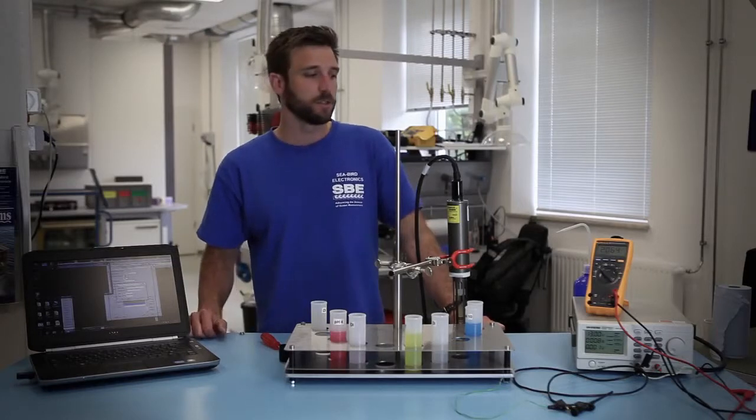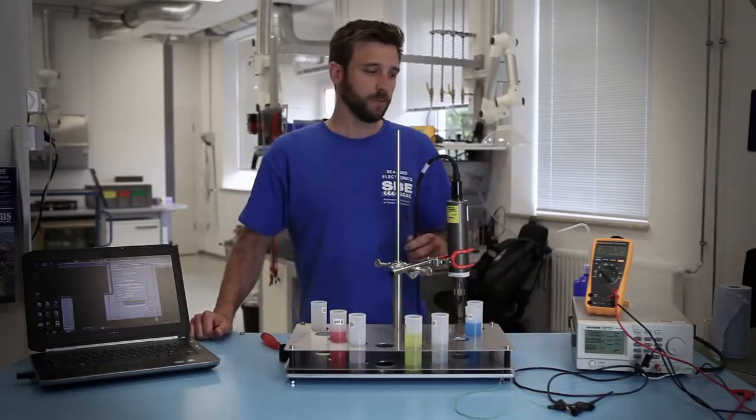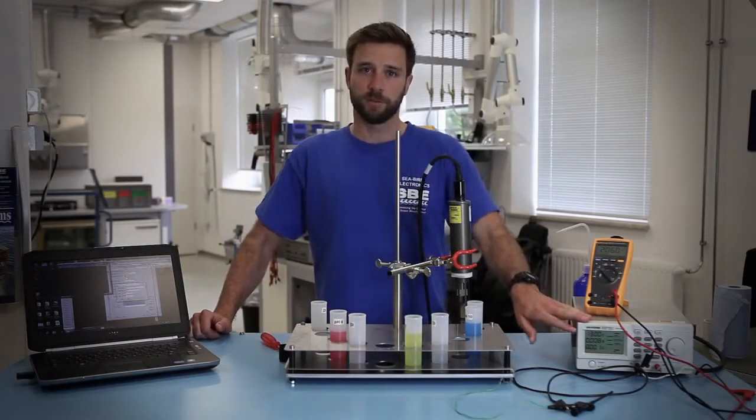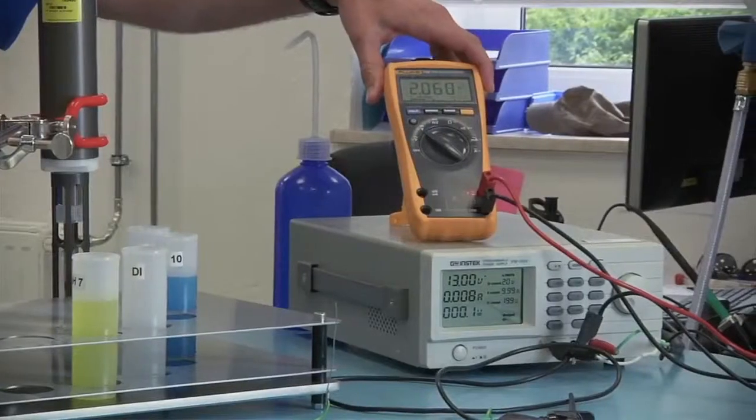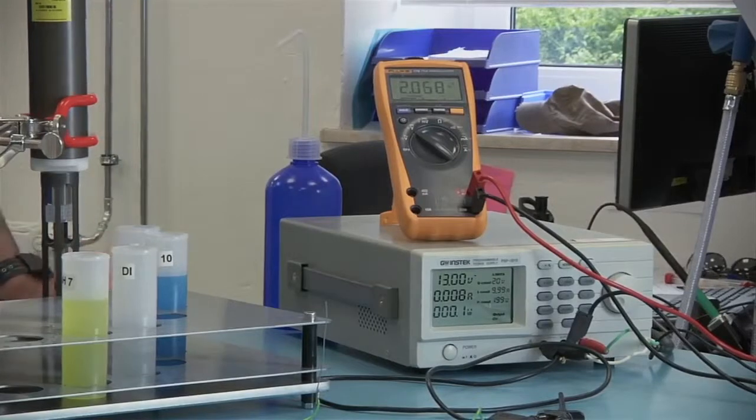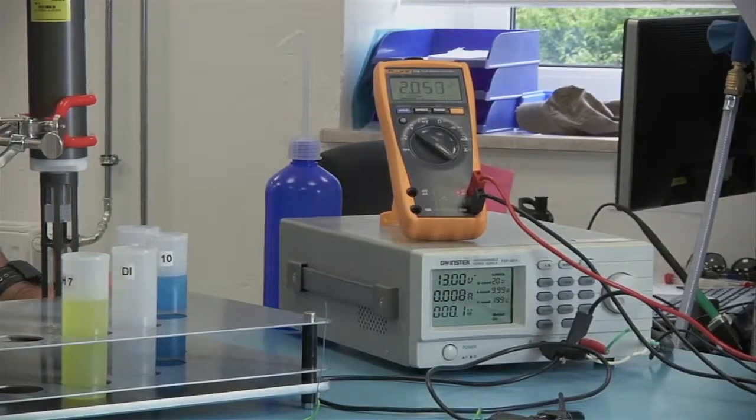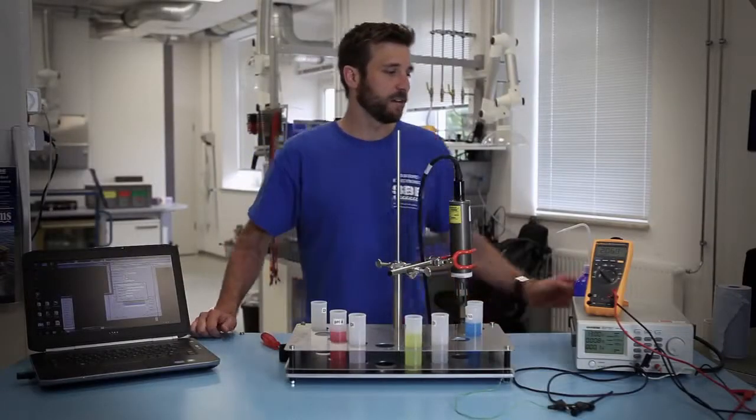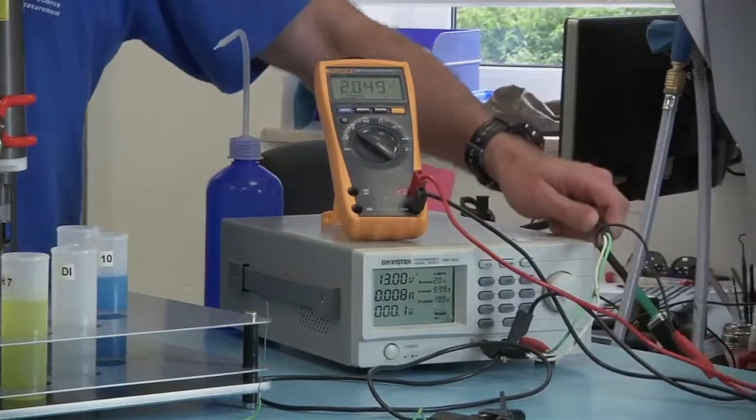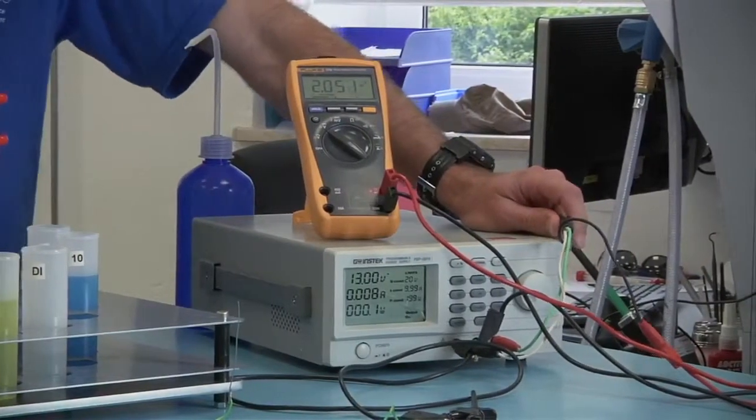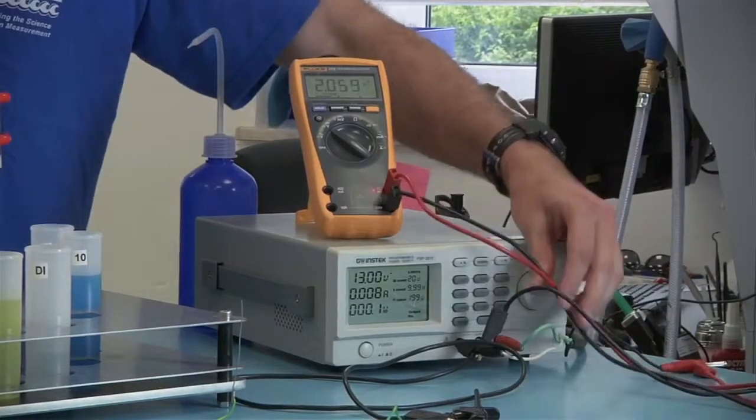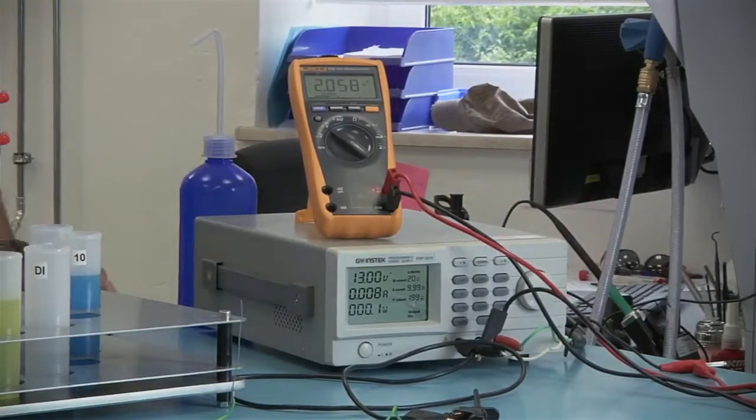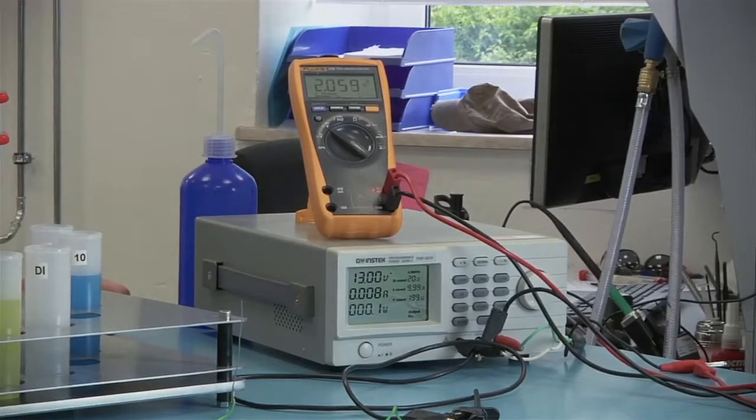When you're calibrating the sensor you'll need to provide power to it. Here we're just using a power supply. You also need a digital multimeter so you can record the voltage output by the pH sensor. In this particular setup we have a cable that attaches to the pH sensor and then into the power supply. And then we have the multimeter in line with the power supply to record the voltage from the pH sensor.